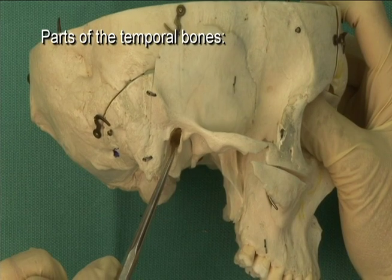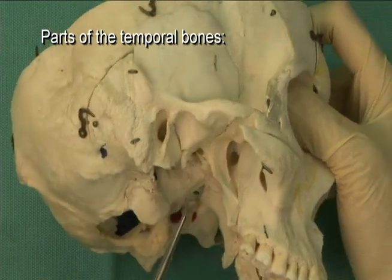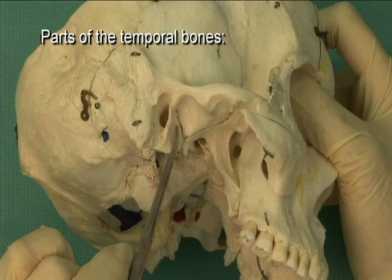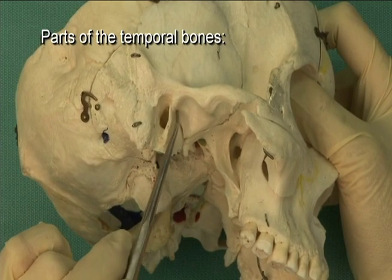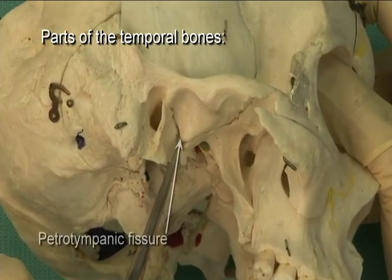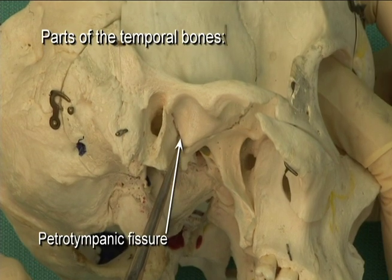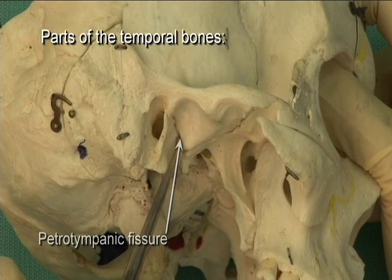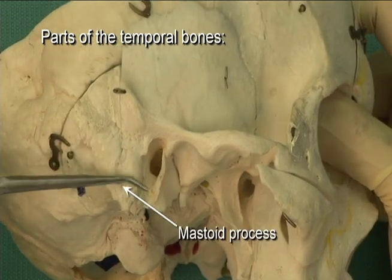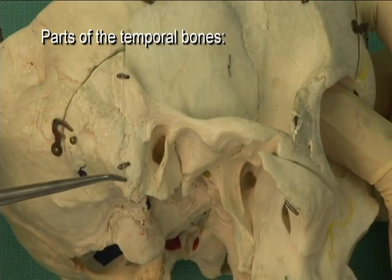In the adult, the petro-tympanic fissure, seen in the mandibular fossa, marks the junction between the tympanic and petrous portions. The mastoid process is also a prominent feature of the temporal bone.